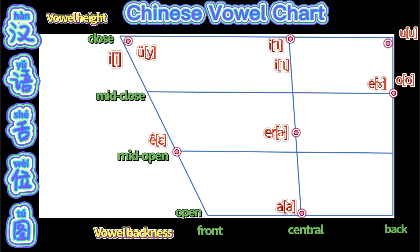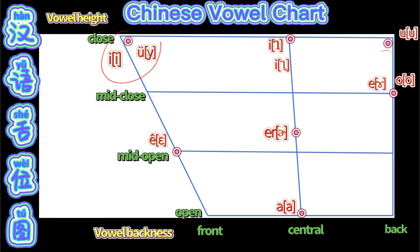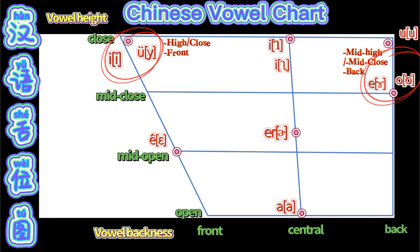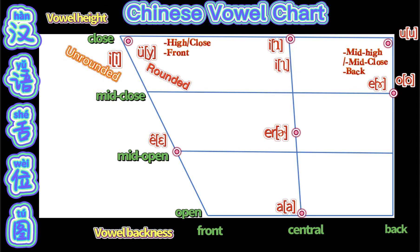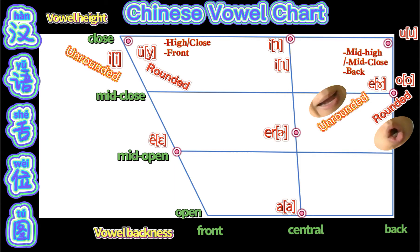Among the six Mandarin Chinese vowels 'a', 'o', 'e', 'yi', 'wu', 'yu', there are three rounded vowels: 'o', 'wu', 'yu'; and three unrounded vowels: 'a', 'e', 'yi'. Now you understand why 'yi' and 'yu' appear at the same points in the Mandarin Chinese vowel chart — because they have similar high, front tongue positions. The only difference is that 'yi' is an unrounded vowel while 'yu' is a rounded one.